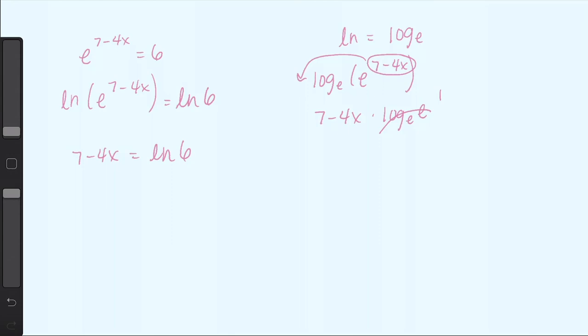So we will have 7 minus ln of 6 equals 4x. Divide by 4. x equals 7 minus natural log of 6 over 4.